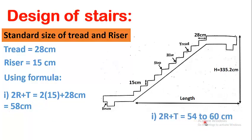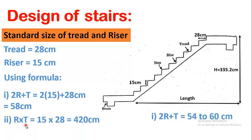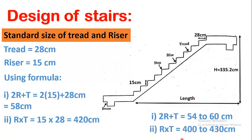58 centimeters lies within the range of 54 to 60 centimeters, so the first formula is satisfied. For the second formula, R × T = 15 × 28 = 420, which also lies within the acceptable range. These values fulfill the requirements of good stairs as discussed in the previous video and follow the correct proportions of thread and riser.